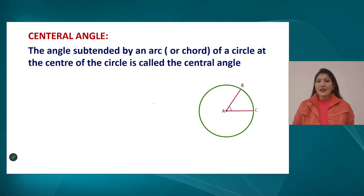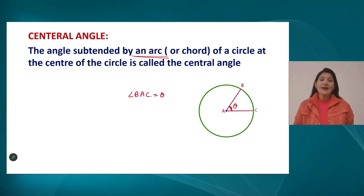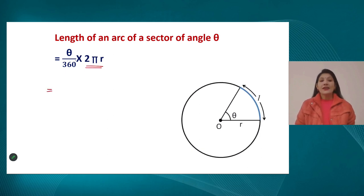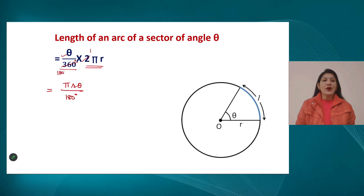The angle made by an arc between two radii of the circle is known as the central angle, represented as theta — for example, angle BAC as theta. The length of arc can be calculated using the circumference: length of arc = pi r theta divided by 180 degrees, which comes from (theta/360) × 2πr, and on cancelling 2 and 360, we get pi r theta upon 180 degrees.